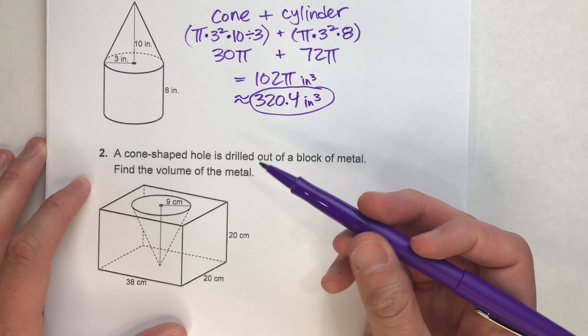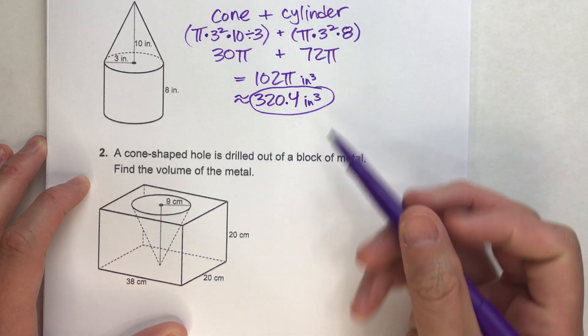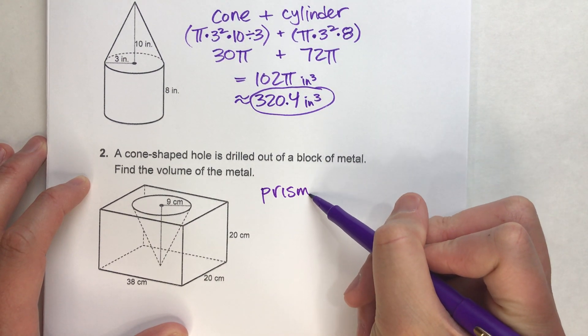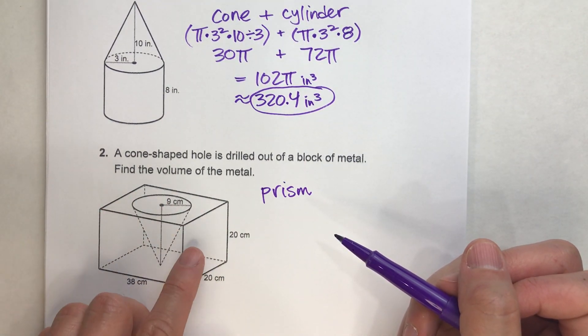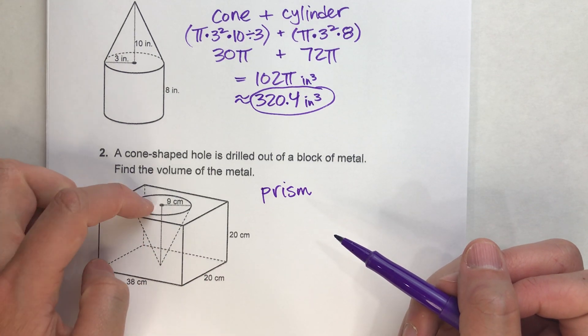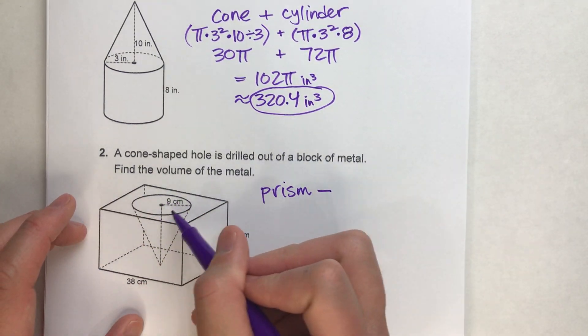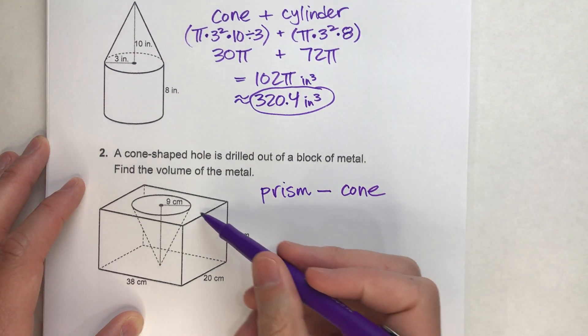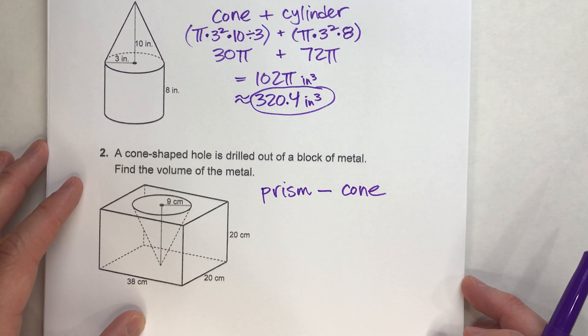First step, let's visualize what's happening here. We start with this rectangular prism. So if we find the volume of this rectangular prism, and then subtract the hole drilled out, which is a cone, we'll be left with the metal block.